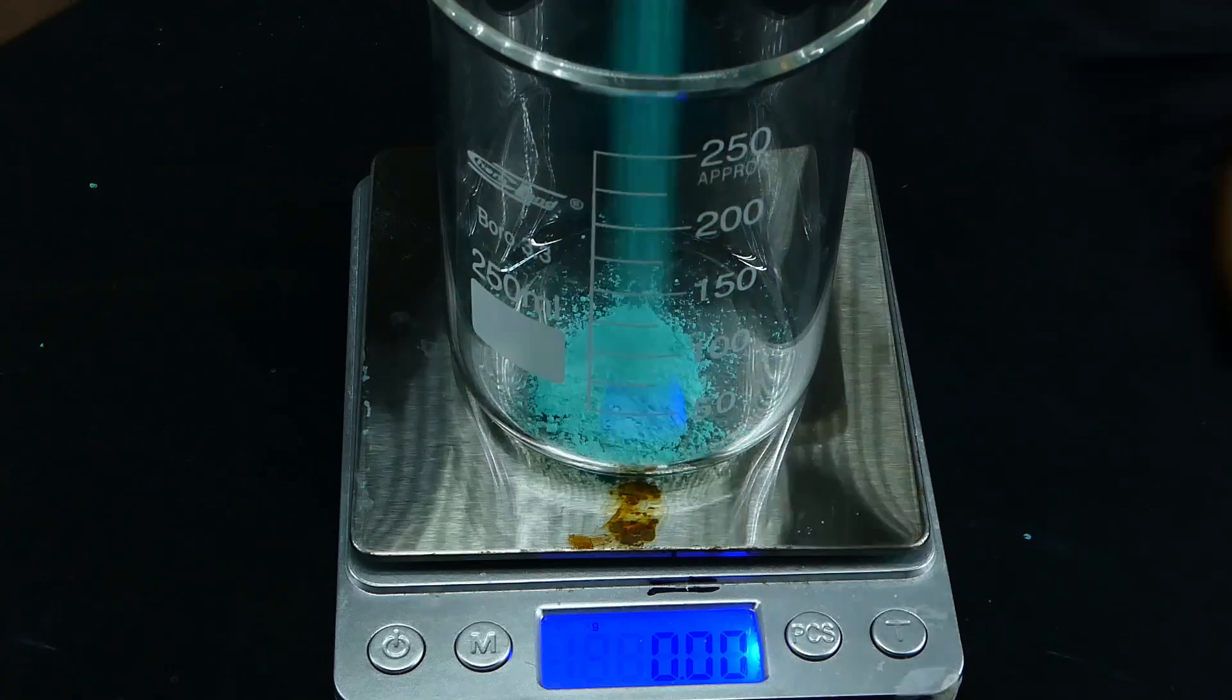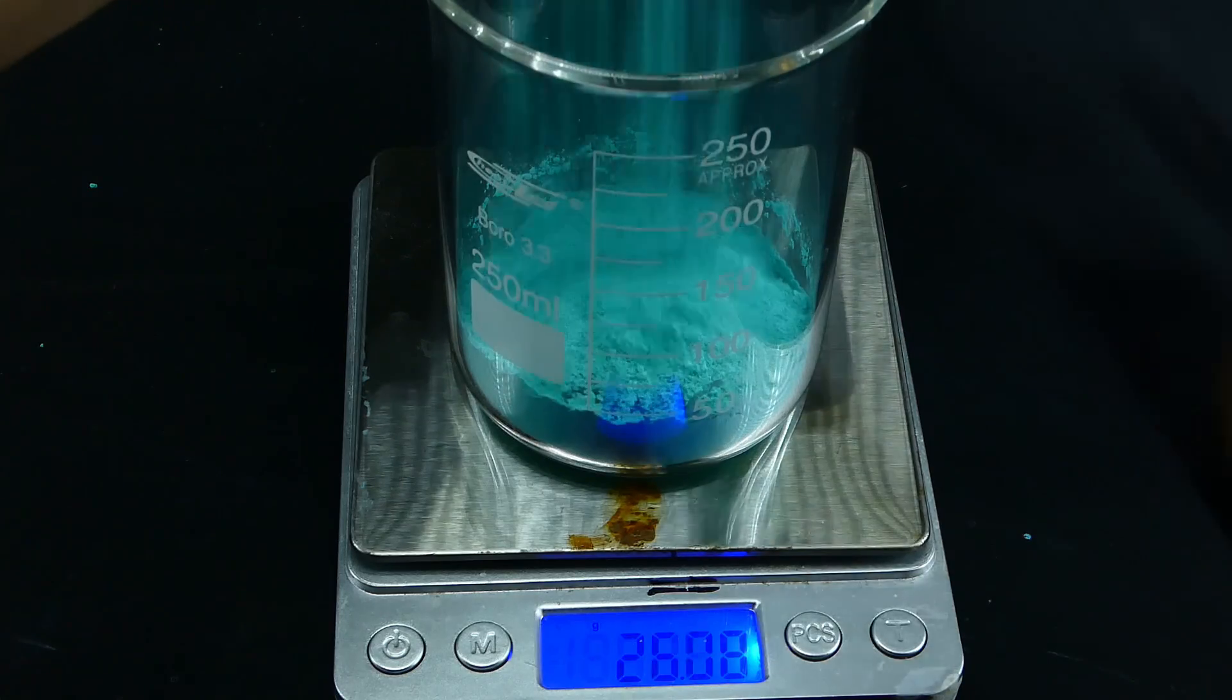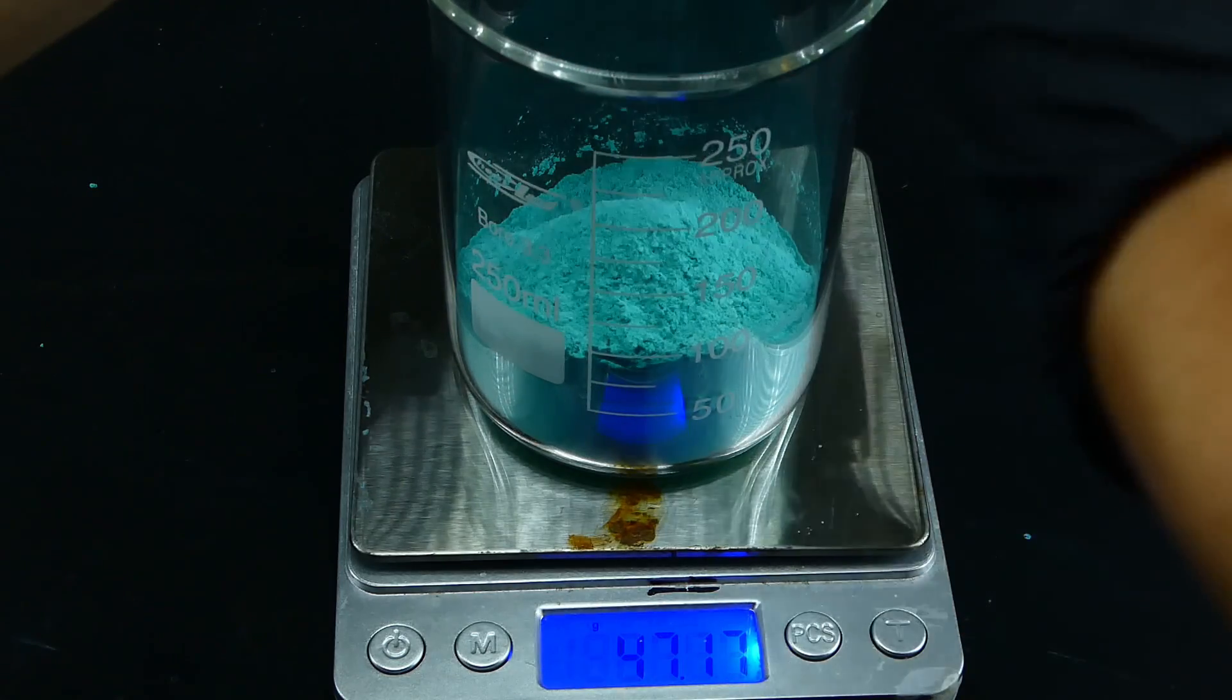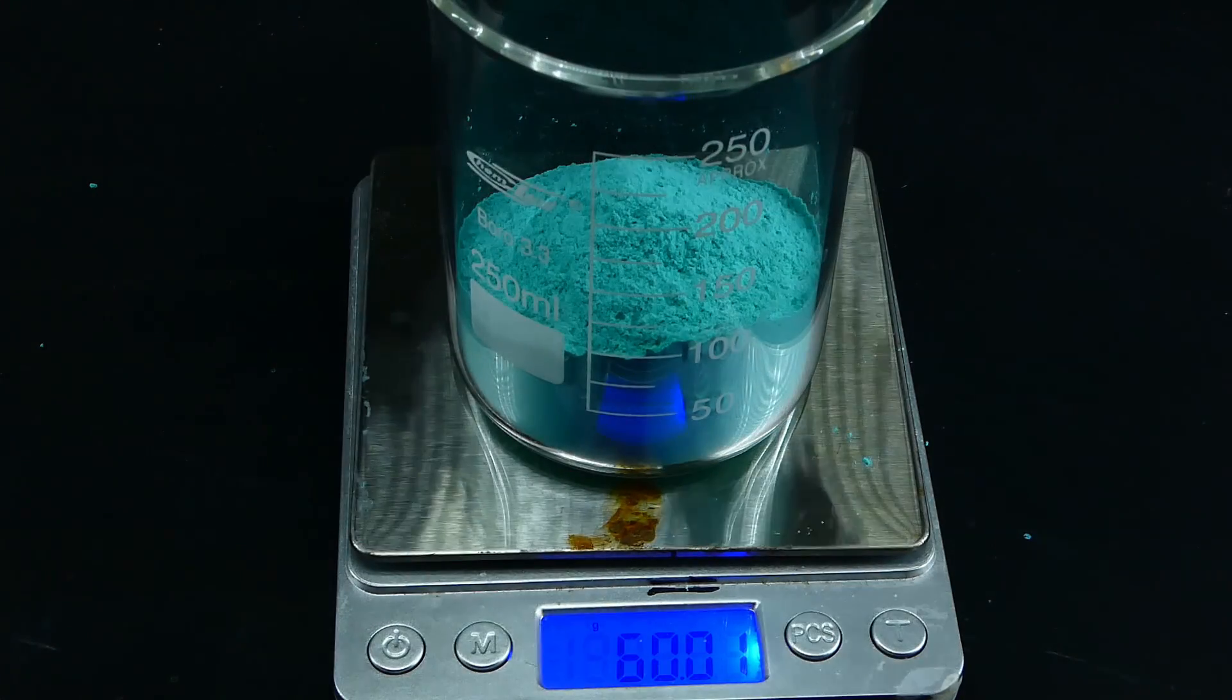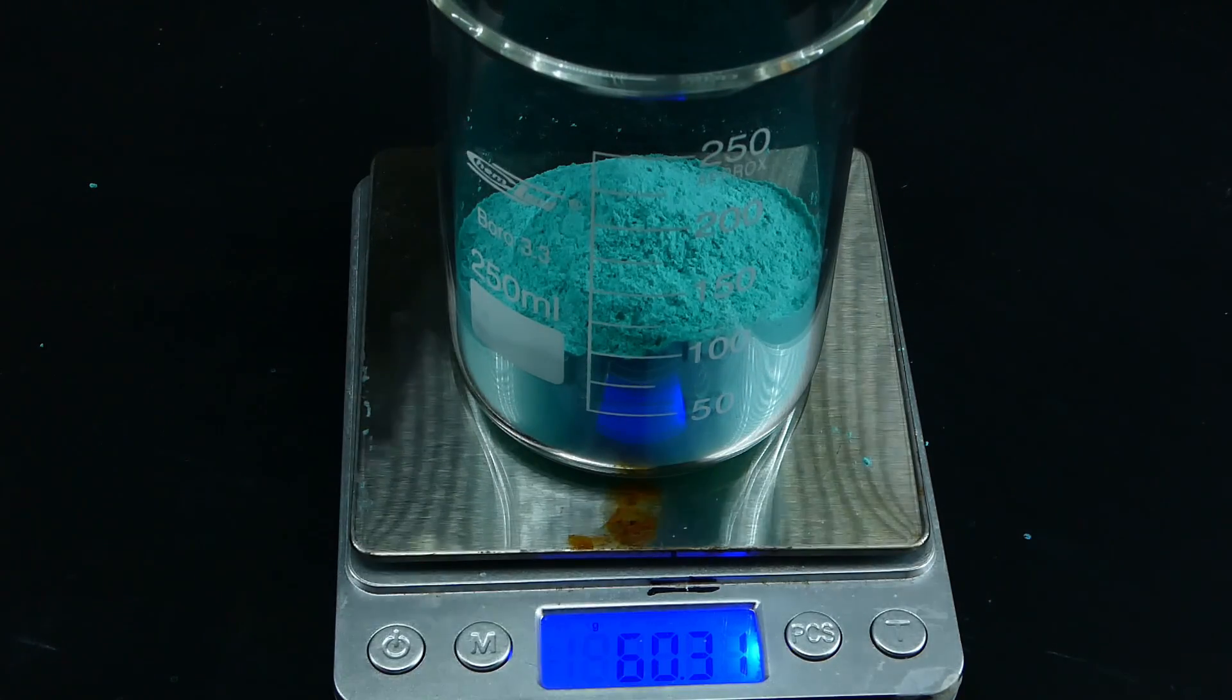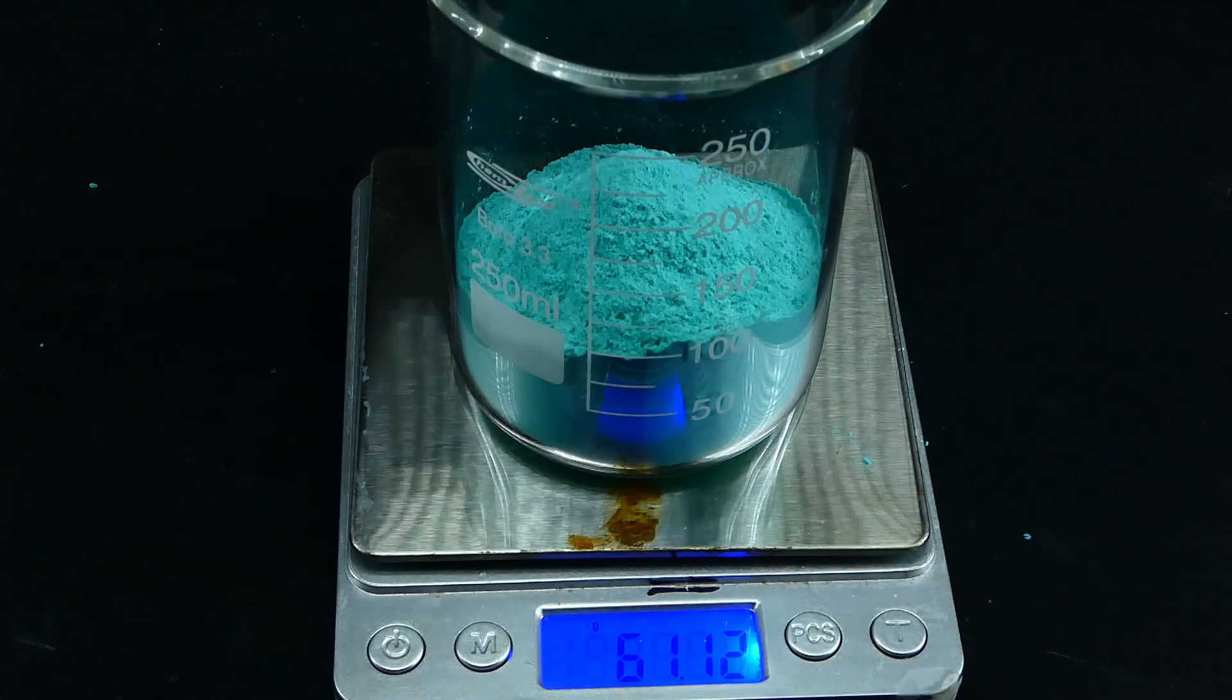After that was done, I weighed the powder and it turned out that I got 61 grams of my product, which is a pretty good yield that is much more than enough to make the pyridine. Since I have so much of it, I decided to have some fun with it and make a crude paint.